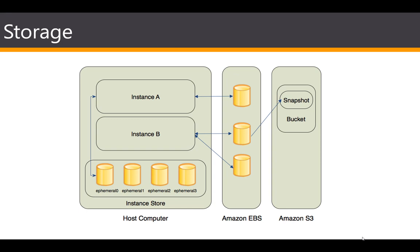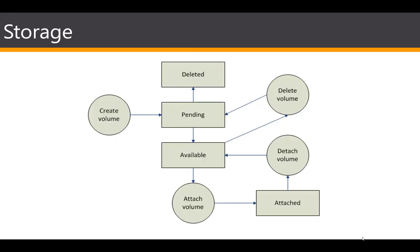EBS-backed instances can be stopped and later restarted without affecting data stored in the attached volumes. There are various instance and volume-related tasks you can do with EBS-backed instances — for example, you can modify instance properties, change its size, update the kernel, or attach the root volume to a different running instance for debugging. That's why EBS-backed EC2 instances are recommended: they are more robust, and their configurability is considerably greater.